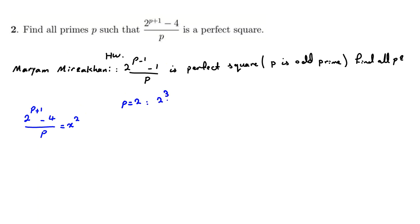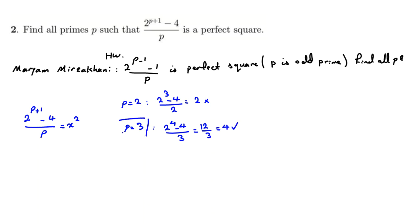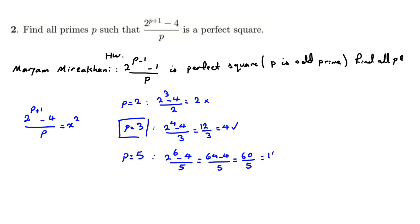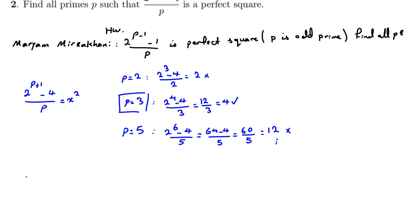Let's check some small prime numbers. If p = 2: (2³ - 4) / 2 = (8 - 4) / 2 = 2, which is not a perfect square. If p = 3: (2⁴ - 4) / 3 = (16 - 4) / 3 = 12 / 3 = 4, which is a perfect square — so p = 3 is a good prime. If p = 5: (2⁶ - 4) / 5 = (64 - 4) / 5 = 60 / 5 = 12, which is not a perfect square.